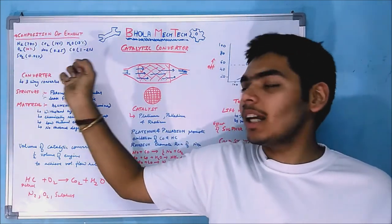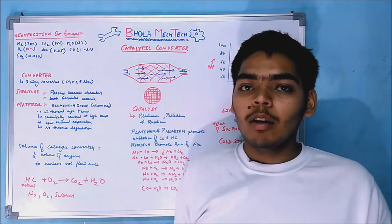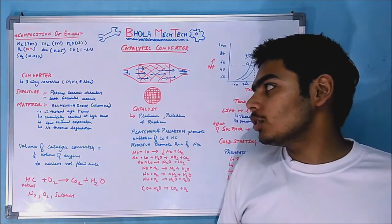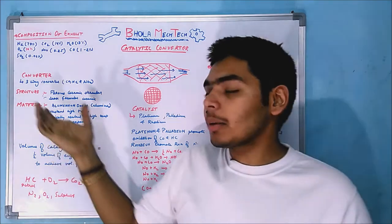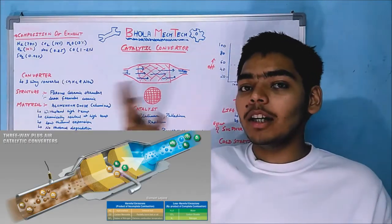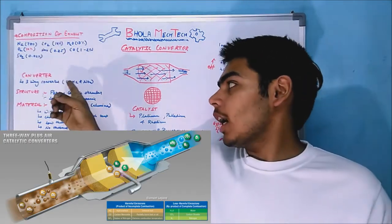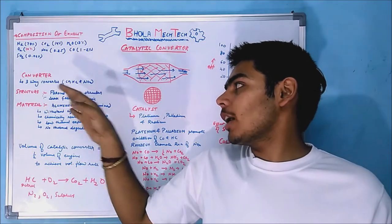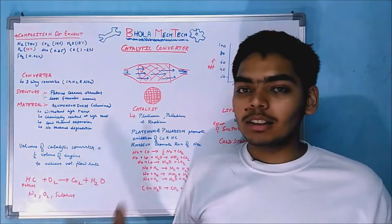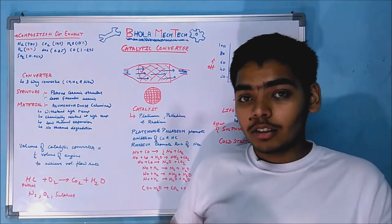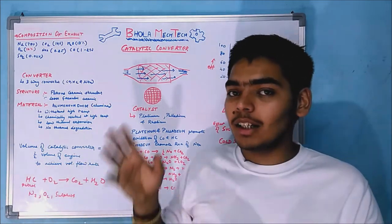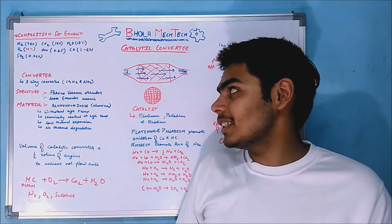These are the gases that need to be treated before entering the atmosphere. We use the catalytic converter, which is also known as a three-way converter because it reduces carbon monoxide, hydrocarbons, and NOx. These are the three gases treated by the catalytic converter, and it is a major advantage that a single device can handle all three.